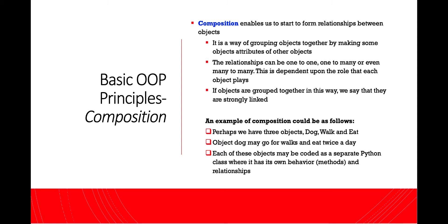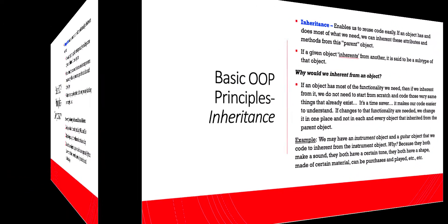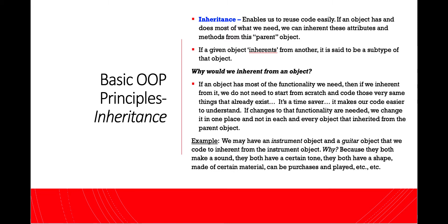Our next OOP principle is composition. Composition enables us to start to form relationships between objects. It's a way of grouping objects together by making some objects attributes of other objects. The relationships can be one-to-one, one-to-many, or even many-to-many, dependent upon the role that each object plays. If objects are grouped together in this way, we say that they are strongly linked. An example of composition could be as follows: perhaps we have three objects — dog, walk, and eat. Object dog may go for walks and eat twice a day. Each of these objects may be coded as a separate Python class where it has its own behavior or methods and relationships.